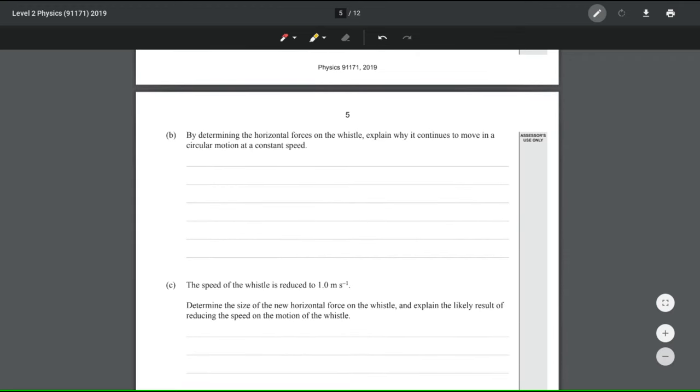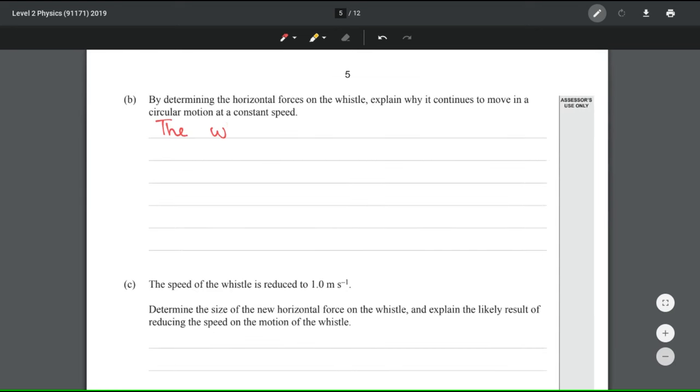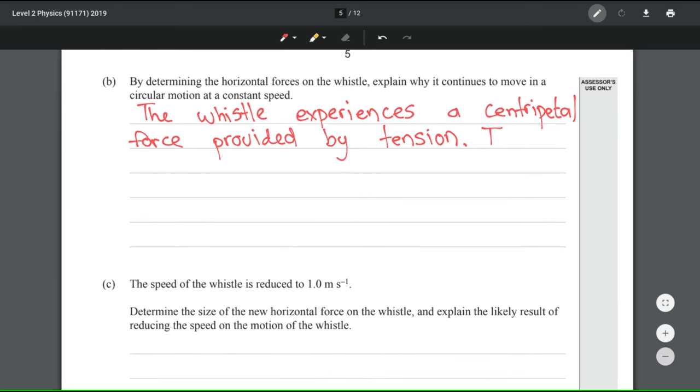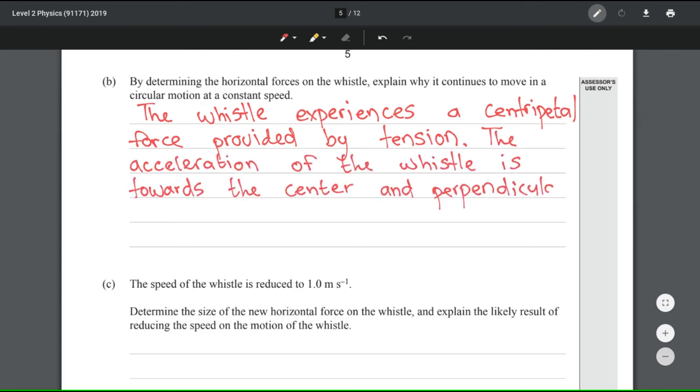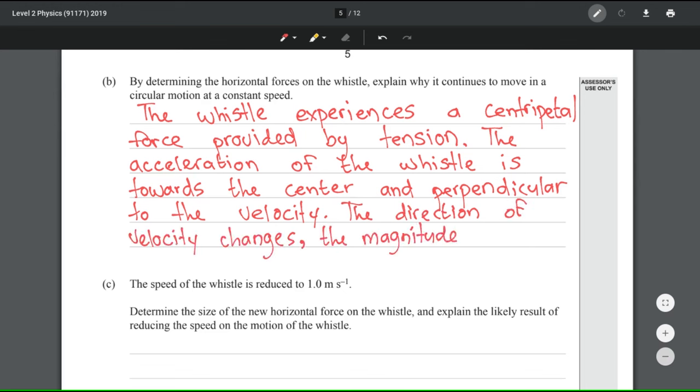By determining the horizontal forces on the whistle, explain why it continues to move in a circular motion at a constant speed. So this here is a typical trap question. What they're cueing you with is the idea that it's moving at a constant speed, and you're somewhat drooled with the idea that constant speed means no net force and no acceleration and so everything should be balanced. In this case, of course, that's not the case. We have a centripetal force which is being provided by the tension which produces a centripetal acceleration changing the direction of the speed without changing the magnitude. So let's try put that into words. The whistle experiences a centripetal force provided by the tension. The acceleration of the whistle is towards the center and perpendicular to the velocity. The direction of velocity changes. The magnitude, or speed, does not.